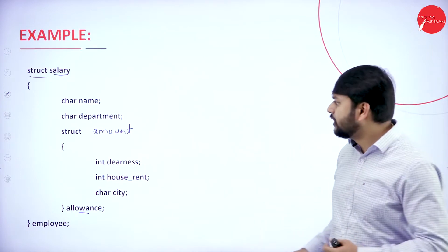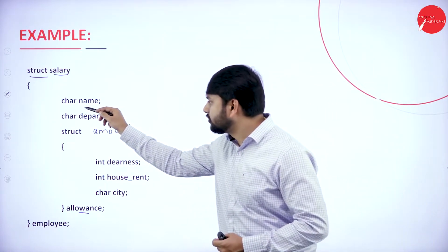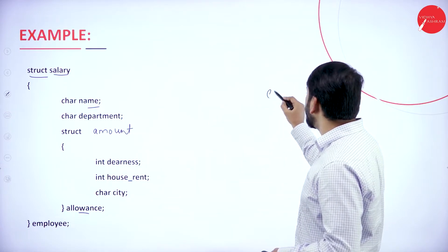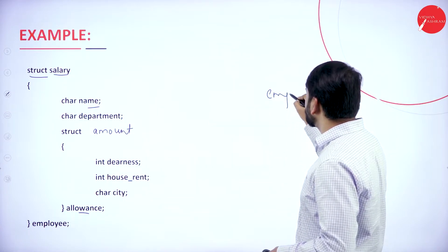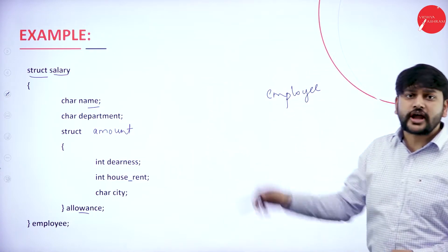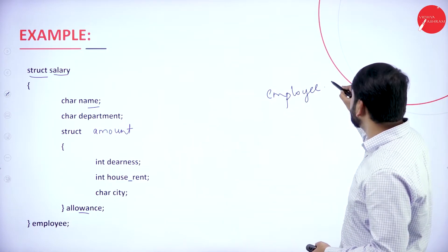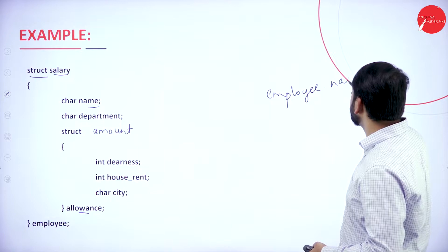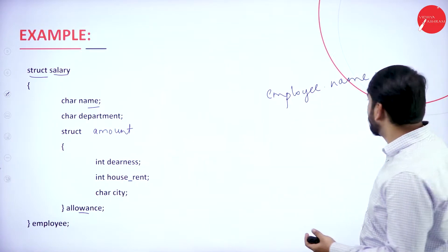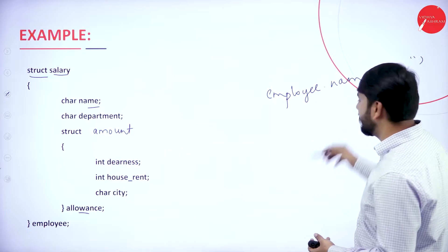How do I access name and other fields? It's very simple — you just use employee dot name. Employee is the variable of type salary, so employee.name is how you access that variable. If you want to store anything, you give it in double quotes for strings.